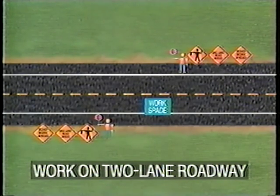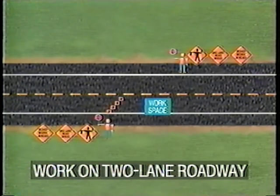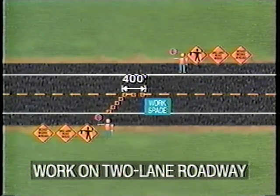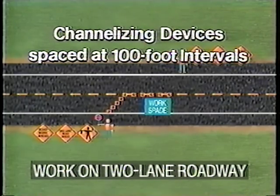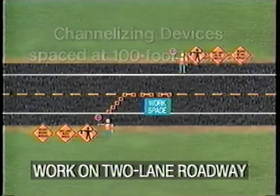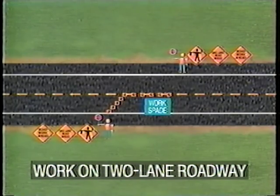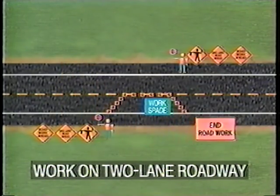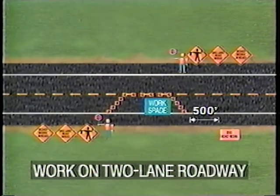At this time, the two flaggers begin controlling traffic through the one-lane section. Next, install a 100-foot taper made up of five or more channelizing devices. A 400-foot buffer space and the work space are then outlined with channelizing devices spaced at approximately 100-foot intervals. The work vehicle may then be moved into the closed lane at the end of the buffer space. The 100-foot downstream taper is then installed at the end of the work space.